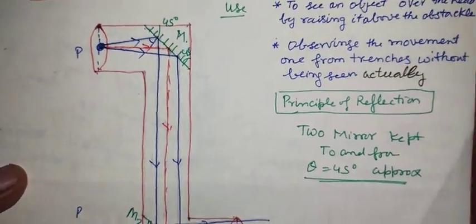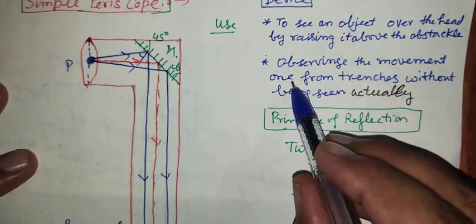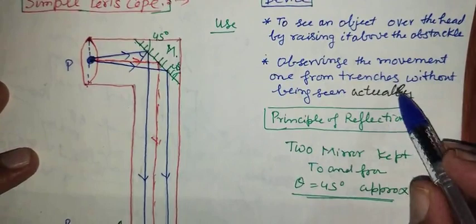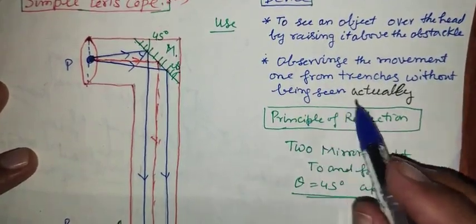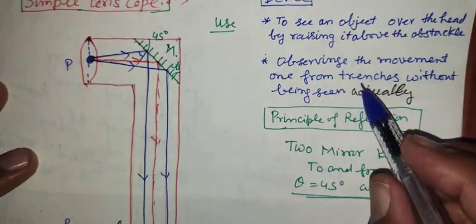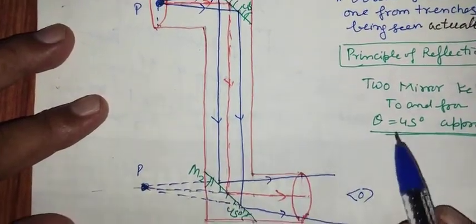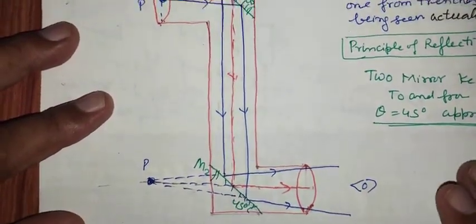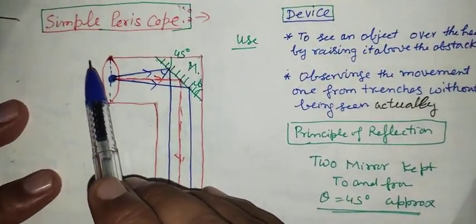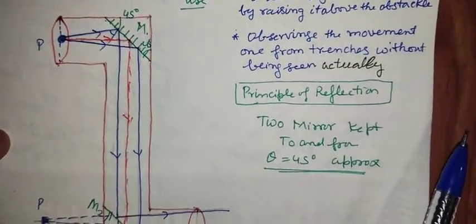So, the concept is that soldiers can observe the movement of enemies, anyone, from any places, from trenches, without being seen actually. When the soldiers see the target by using the periscope, in that condition, the enemy soldiers cannot understand, cannot see the movement of the soldiers.